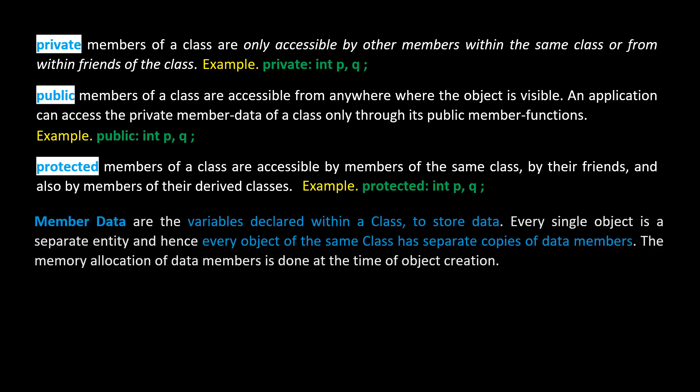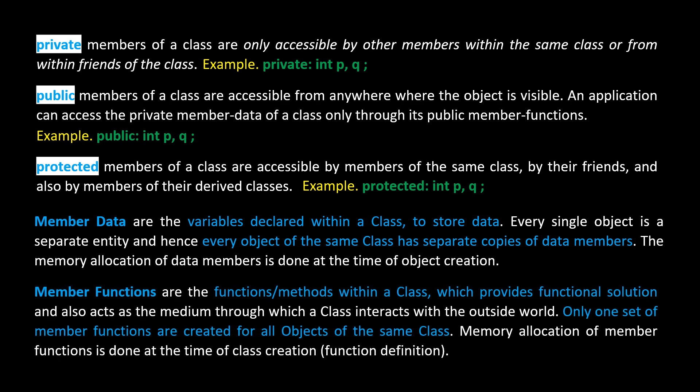Member data are the variables declared within a class. Every single object is a separate entity, and hence every object of the same class has separate copies of data members. Memory allocation of data members is done at the time of object creation. Member functions are the functions or methods within a class which provide a functional solution and also act as the medium through which a class interacts with the outside world. Only one set of member functions is created for all objects of the same class, and memory allocation of member functions is done at the time of class creation through the function definition.